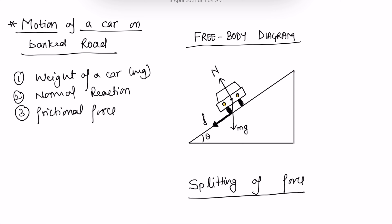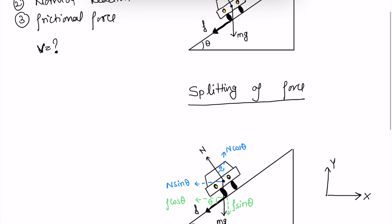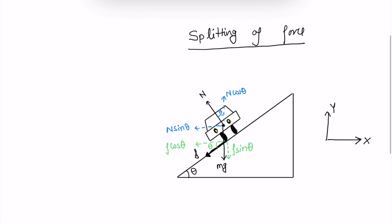We are learning about this motion. Students, we must know the velocity of a car so that the car is moving in circular motion. We need to know the velocity, which comes from our diagram and the forces shown, and we need to split those forces.